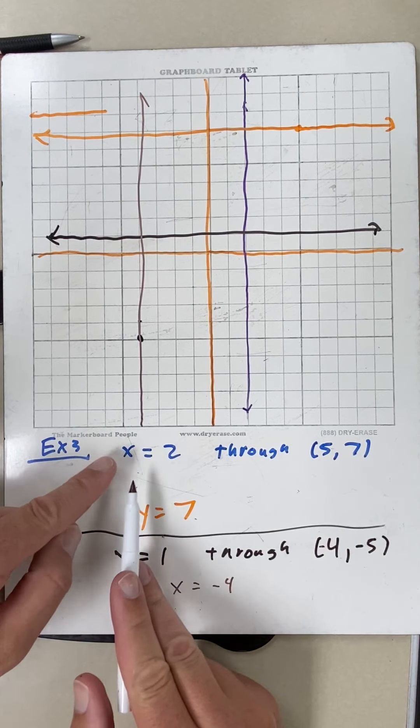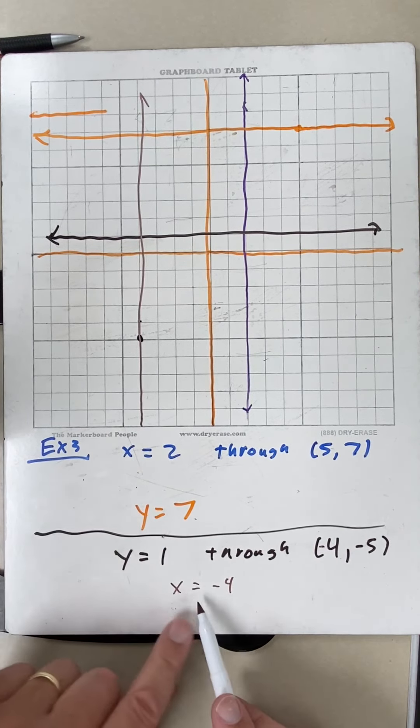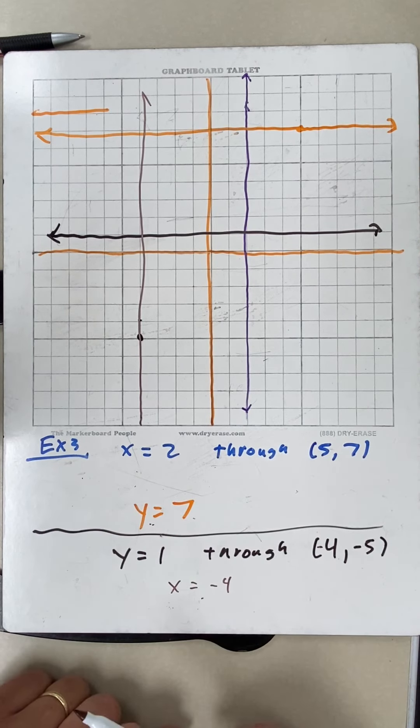So once again, when this happens, we choose the opposite letter to get perpendicular. And then we take that letter's value: y equals 7, x equals negative 4. All right, this will get you through the end of Chapter 2, Section 2, Day 3.